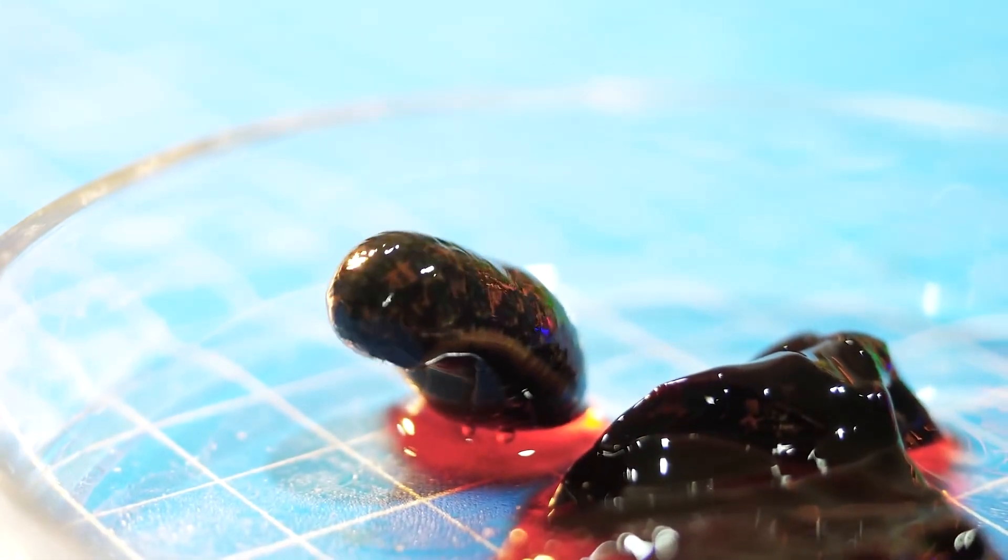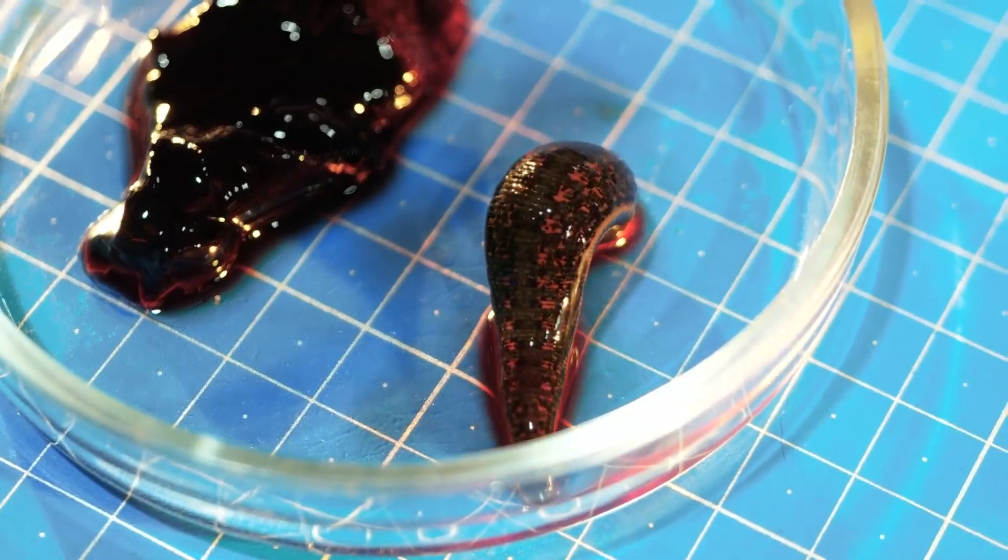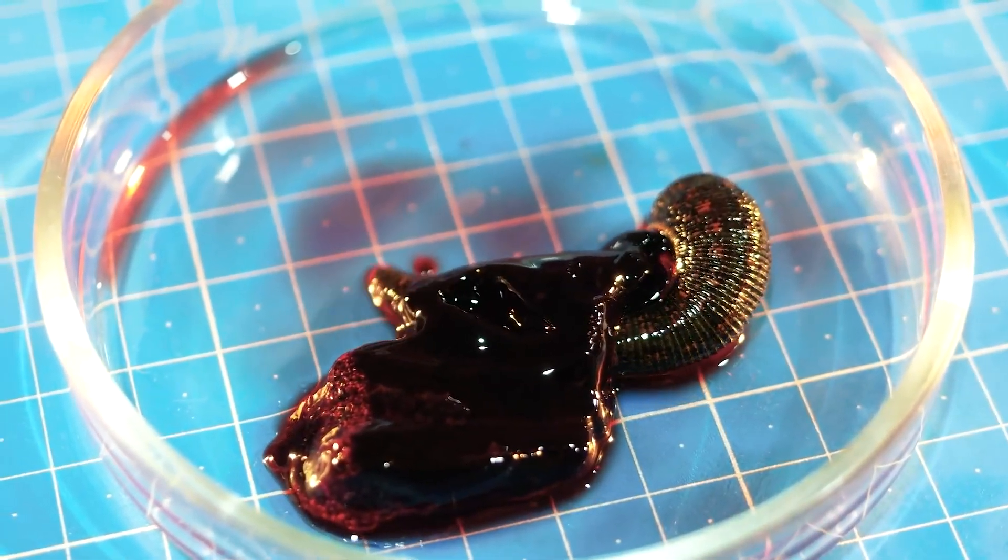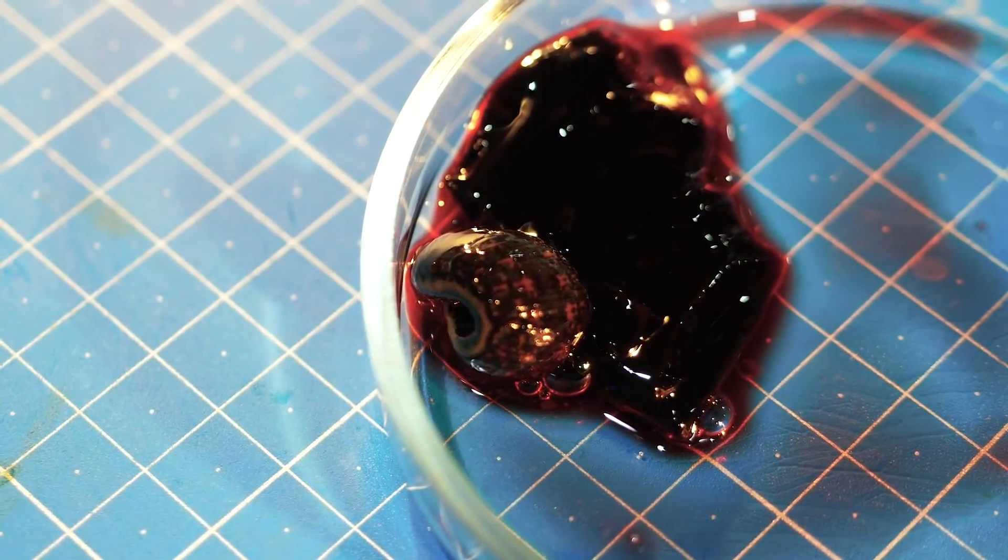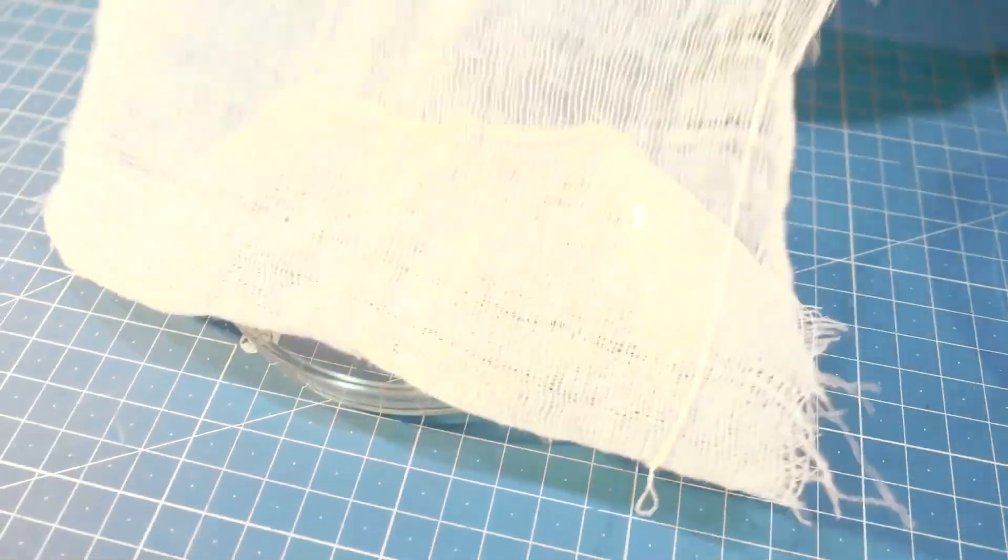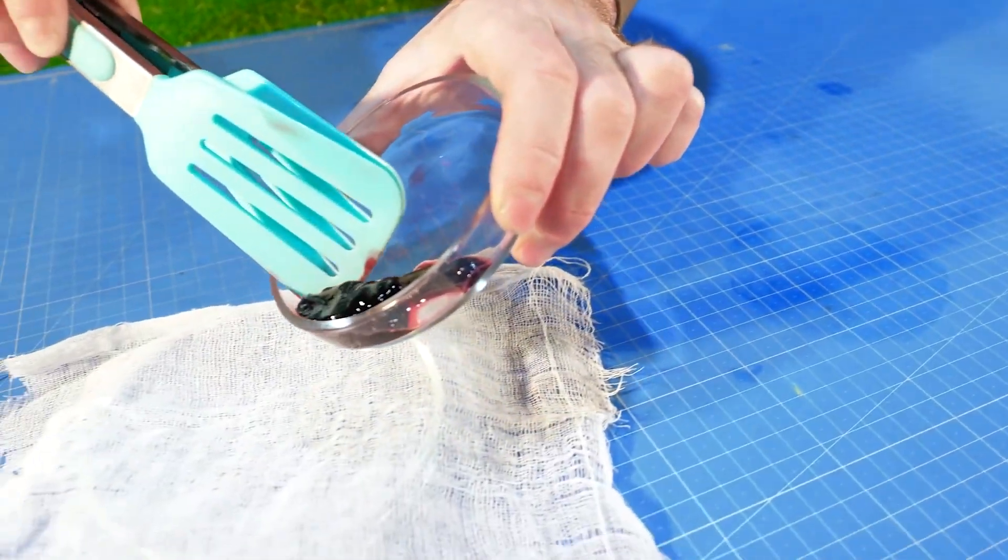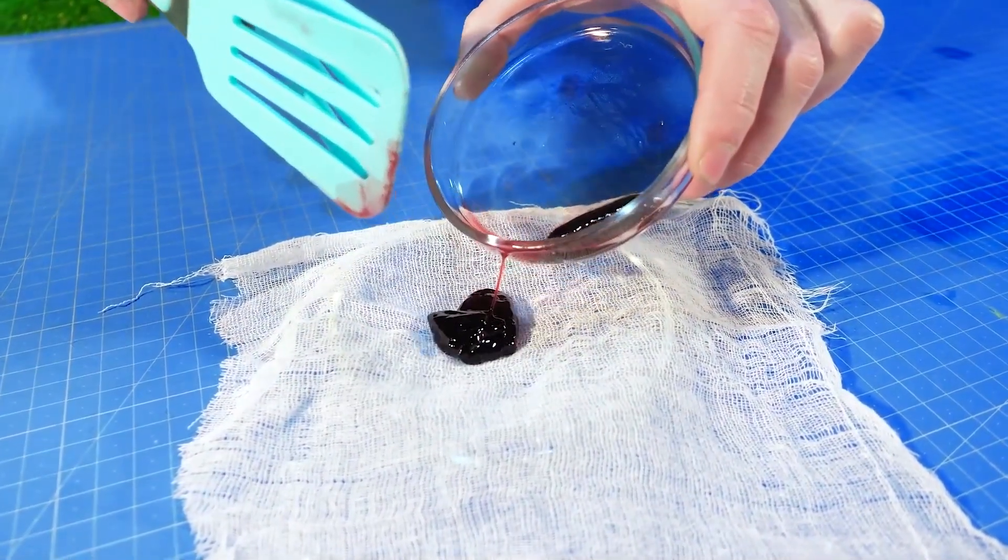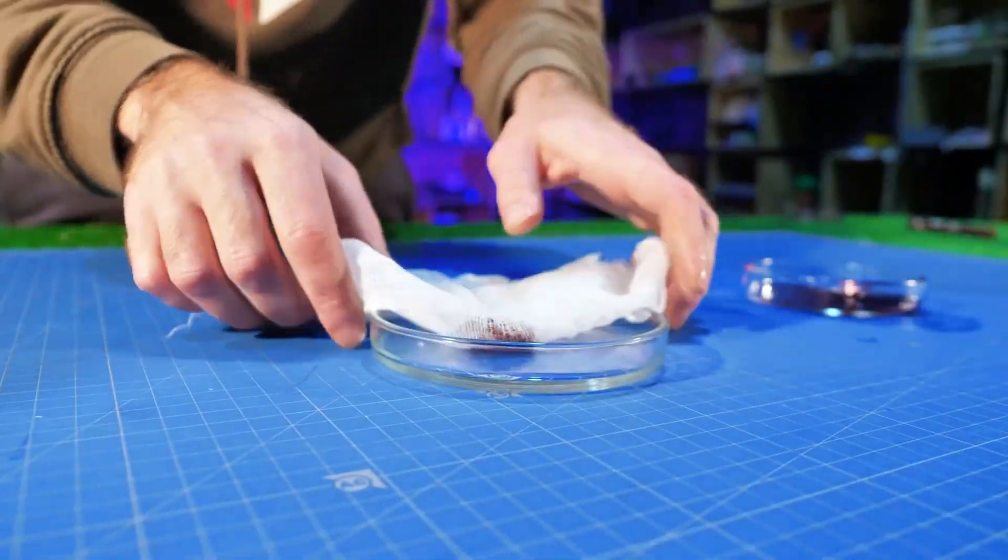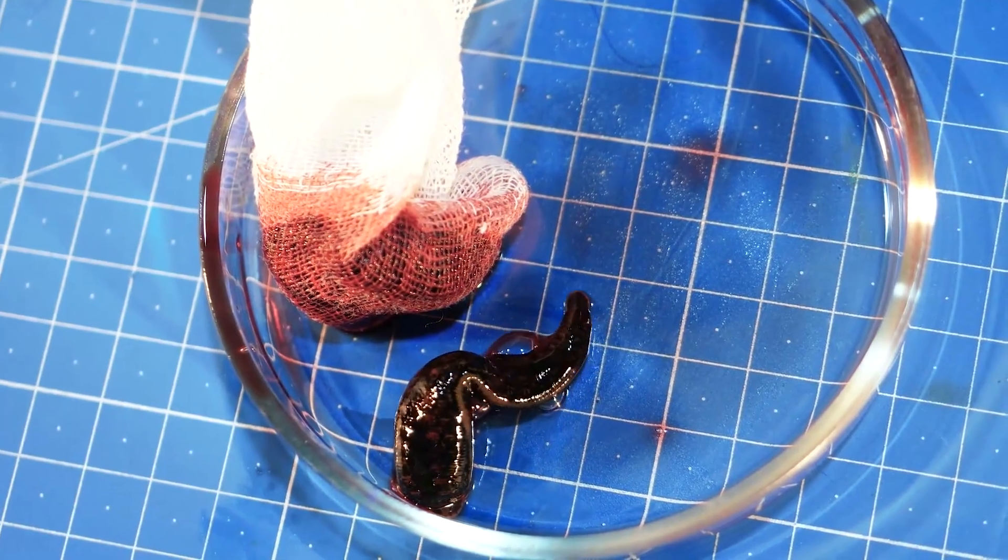The leech senses that there is blood nearby, but where it comes from and what to suck on is not at all clear. Let's change the conditions and see if the leech can get a snack on land, or rather in a petri dish.